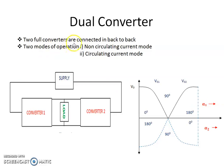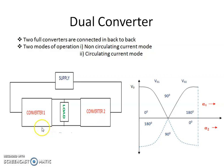A dual converter has converter 1 and converter 2, connected across the load in parallel, with the same supply given to both converter 1 and converter 2. By varying the firing angle of converter 1 from 0 to 180 degrees, we can obtain both rectification operation and inversion operation.